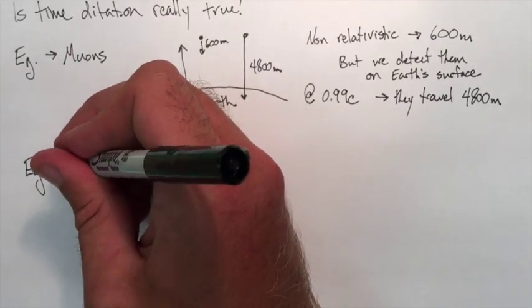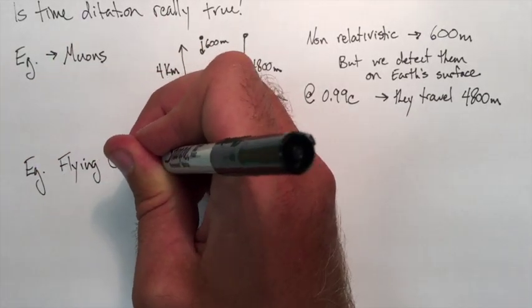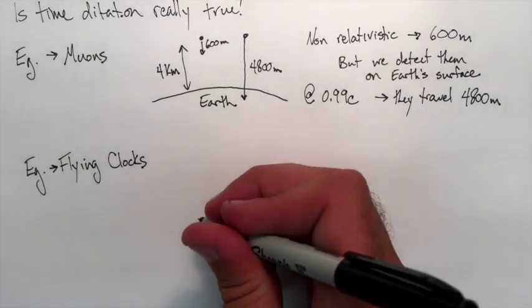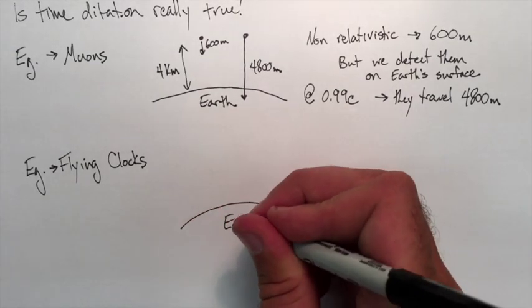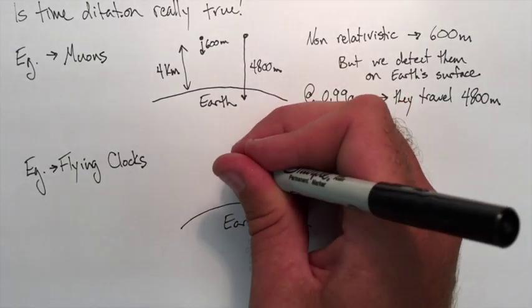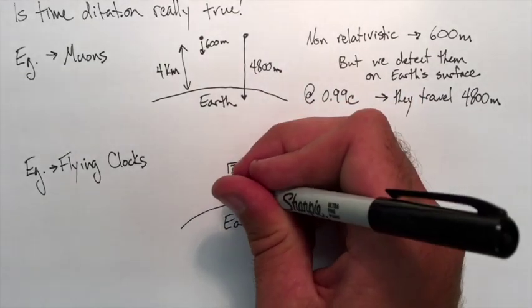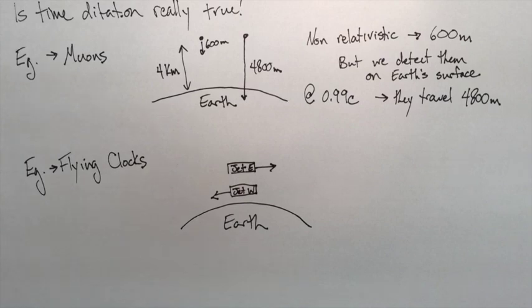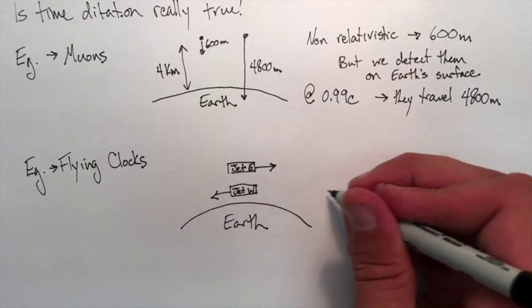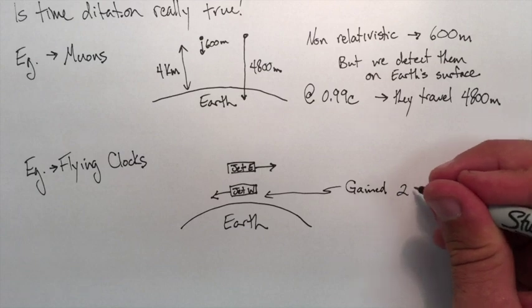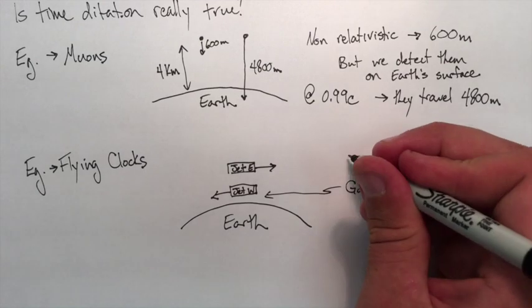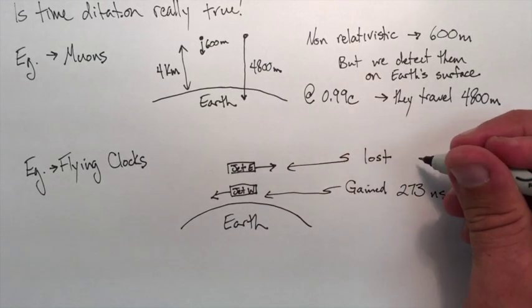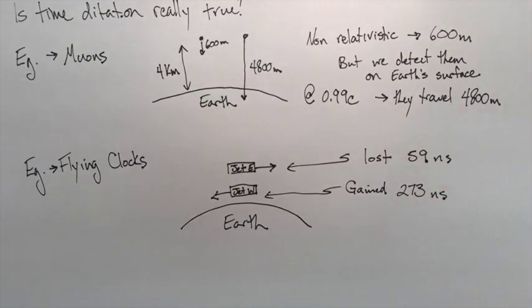Second one are flying clocks. So back in the 70s, we put atomic clocks that were exactly synced to each other—one on a jet flying east, one on a jet flying west. We let them fly around for a while, got them to land again, looked at the clocks, and then see if they matched up. The jet flying west gained 2.3 nanoseconds, and the one flying east lost 559 nanoseconds. So another example of relativity.